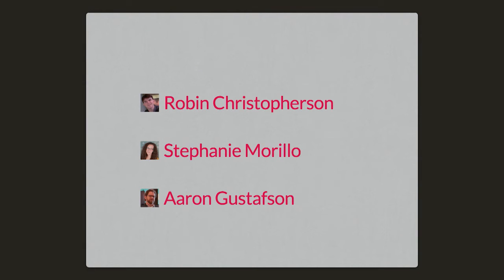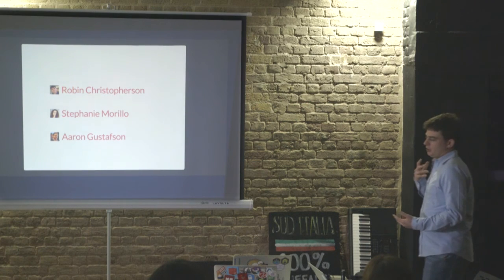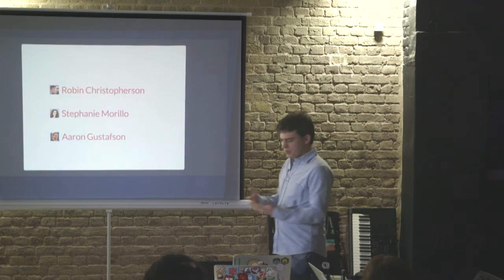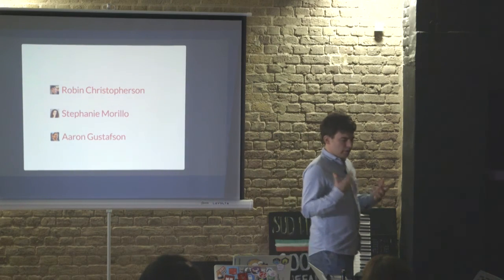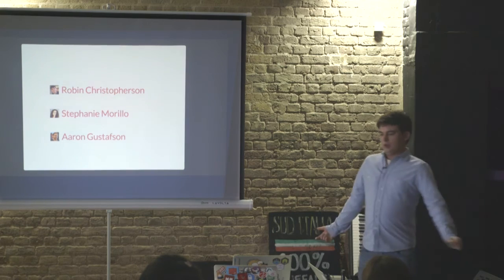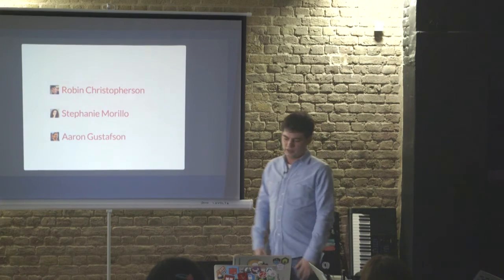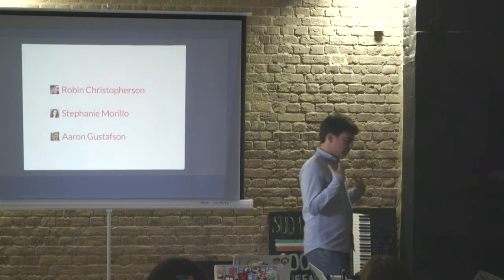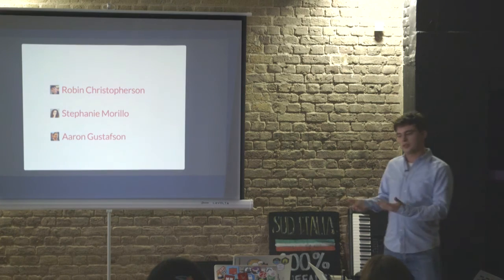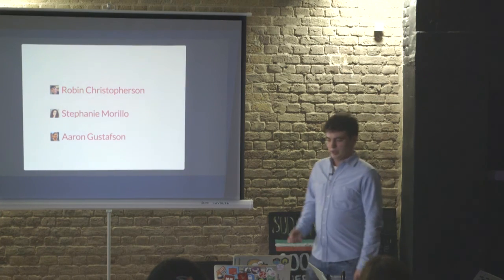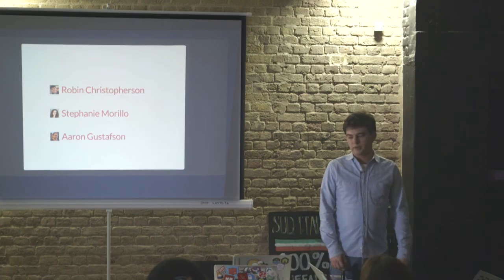At the end of the day, we're going to look to the future — thinking about how we can build interfaces when we don't actually know anything about the devices. What about building for devices that haven't been built yet? What about building for things like Amazon Echo — how can we build for things when we don't even have a user interface, no screen, just something that you can talk to? Robin Christophson is going to be talking about inclusive design, Stephanie Murillo is going to talk about writing copy and designing conversations with users, and Aaron Gustafson will talk about building for devices that we don't know about.